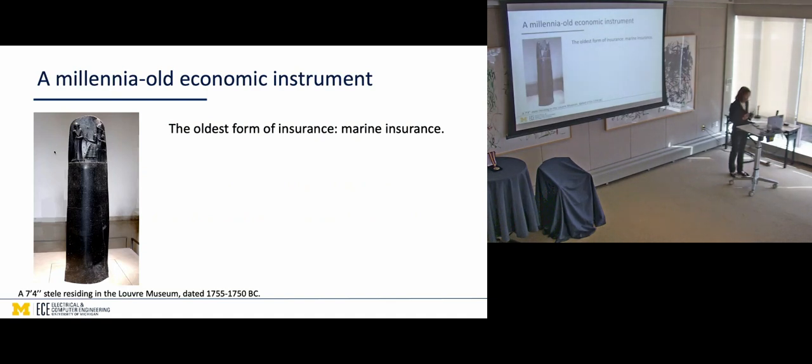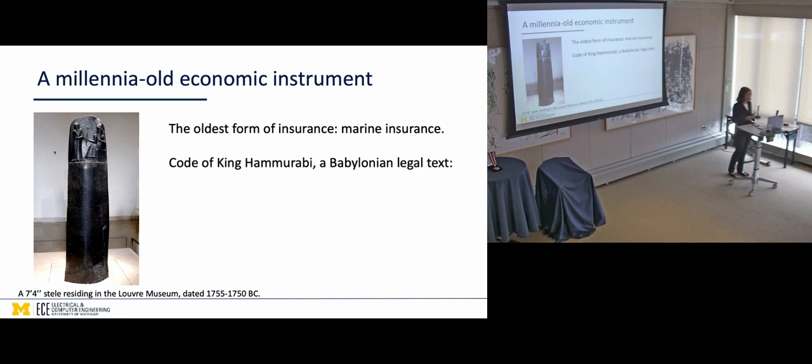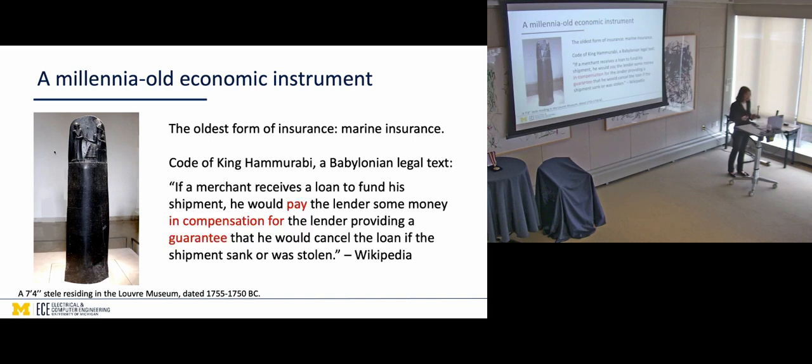I'm going to start with a bit of history. Insurance is a very, very, very old economic instrument. This picture here is the statues you can find in the Louvre, and on which you can find a very old piece of legal text, dating back to, attributed to King Hammurabi. It's a Babylonian legal test. Apparently, this was considered the first written record of what an insurance policy is, and it has to do with marine insurance. If a merchant receives a loan to fund his shipment, he would pay the lender some money in compensation for the lender providing a guarantee that he would cancel the loan if the shipment sank or was stolen. It's basically insurance.